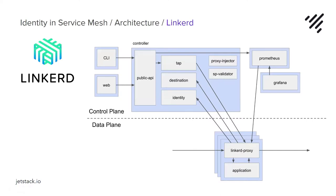We're now going to move on to Linkerd. Linkerd is a service mesh in the CNCF. It has a very similar architecture — a control plane and a data plane — though the proxy is not Envoy but a Rust-based proxy, the Linkerd proxy. It also has a component in its control plane, much like Istio, that's responsible for identity and providing identity to all the proxies in the data plane. We're going to see a demo of how to plug in an intermediate into Linkerd and see a set of workloads running.